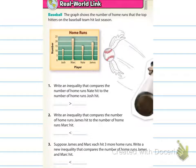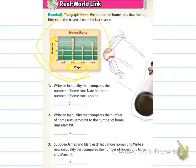It says that the graph shows the number of home runs that the top hitters on the baseball team hit last season. Over here we've got the numbers, and over here it's the player. Josh hit somewhere around 12 or 13 home runs, Mark hit somewhere around 23, Nate hit around 15, and James hit around 19 home runs.